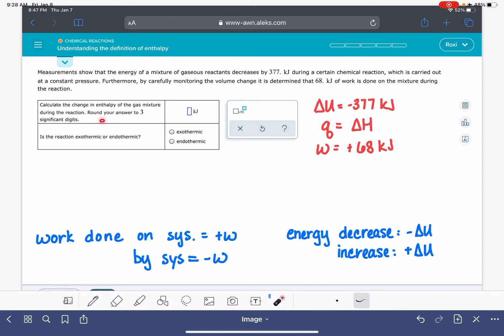And the problem is asking us to calculate the change in enthalpy. That's this right here. So to calculate the change in enthalpy, we're going to use the equation delta U equals q plus w. Or for this particular problem, because it's at constant pressure, instead of saying q, we can say delta H. So delta U is delta H plus w.